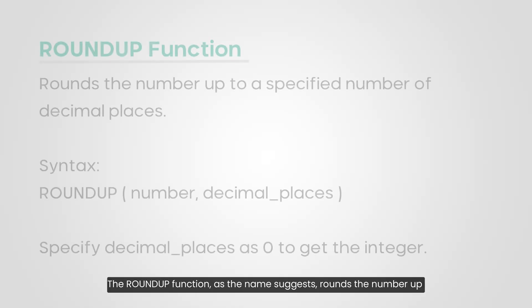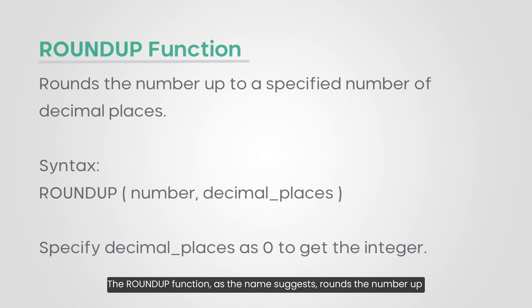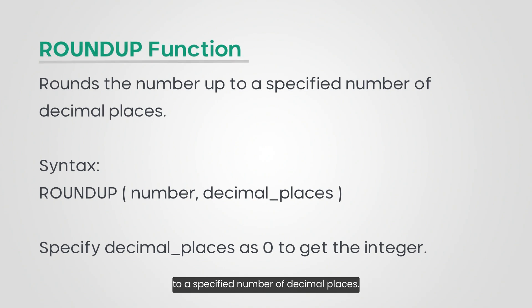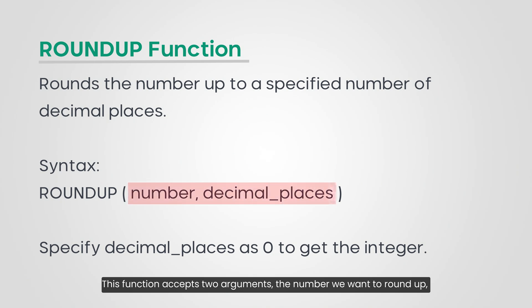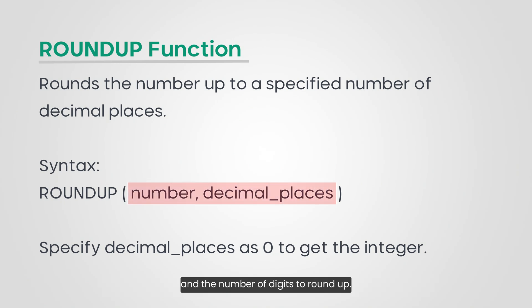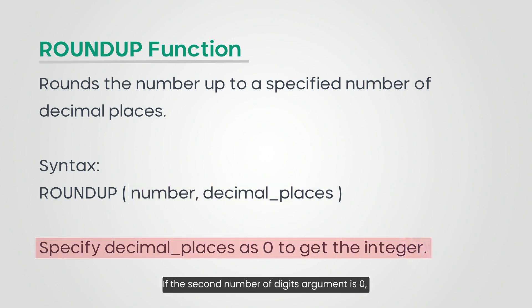The ROUNDUP function, as the name suggests, rounds the number up to a specified number of decimal places. This function accepts two arguments: the number we want to round up, and the number of digits to round up. If the second argument is zero, the number is rounded up to the nearest integer.